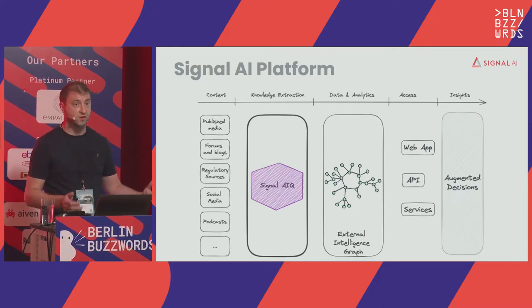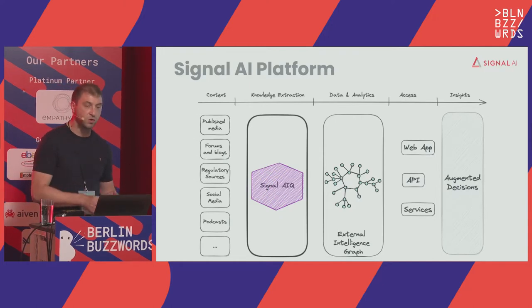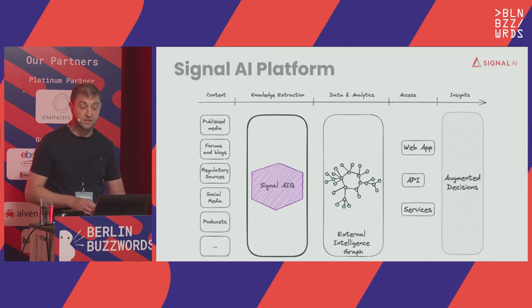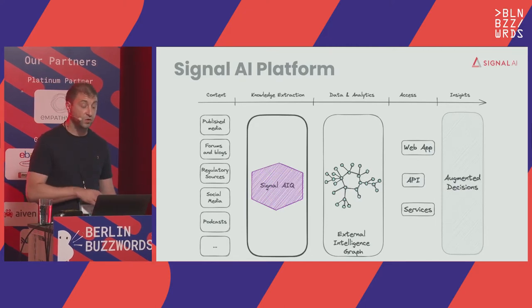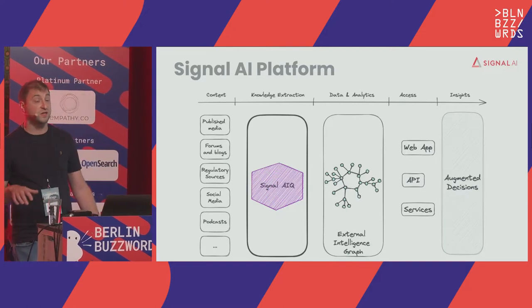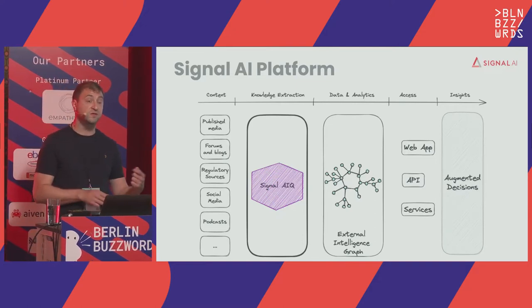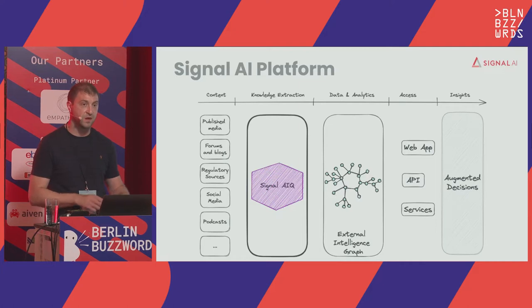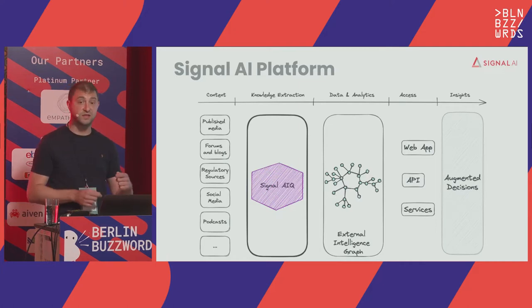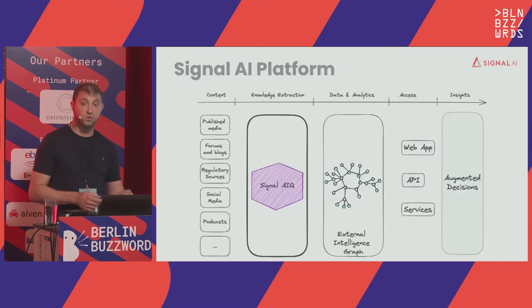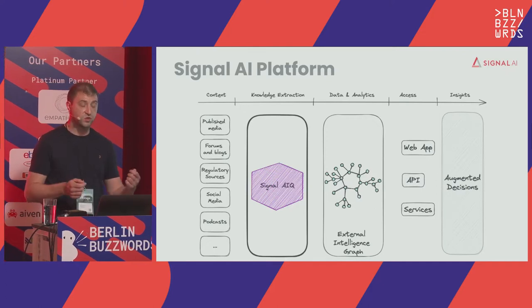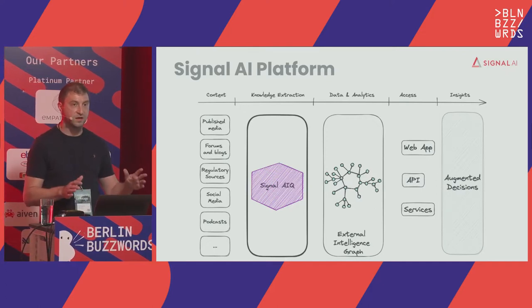We ingest millions of unstructured content every day — from news to social media, from blogs, forums, regulatory sources, as well as podcasts and broadcast, et cetera. All of this content goes through a knowledge extraction platform where we extract various types of metadata in near real time. The enriched documents then land in a bunch of different target systems, like an object store, Elasticsearch, and a few others, which we logically call our external intelligence graph.